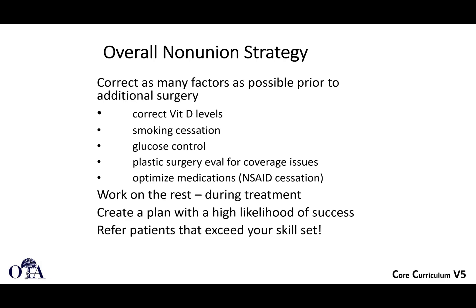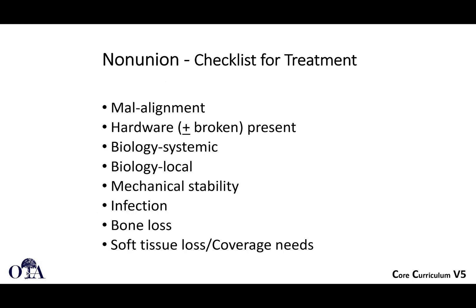You really want to correct as many factors as possible prior to additional surgery. If labs revealed low vitamin D, correct that; try to get them to quit smoking; glucose control is important; local tissue issues may require a plastic surgeon for coverage problems; and optimize their medications. Your checklist for non-union should include: malalignment, broken hardware, biologic and systemic issues, local tissue problems, lack of mechanical stability, infection, bone loss, and need for soft tissue coverage.